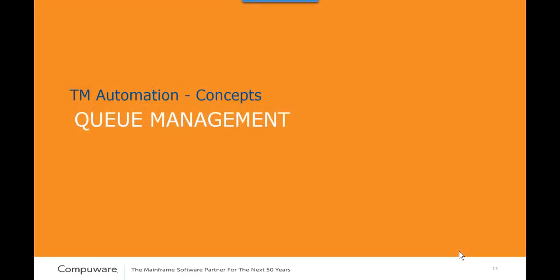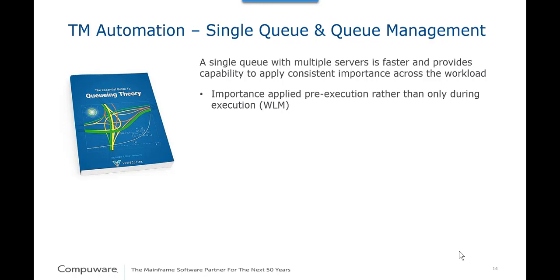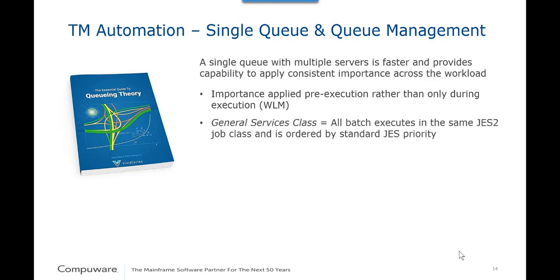Next, the concept of a single queue with multiple servers is faster than traditional queues and has enabled Throughput Manager to apply consistent importance across the workload. Importance is applied pre-execution to each job, in contrast to WLM where importance is applied to a category only during execution. All SLM-managed batch runs in the same class known as the general services class or queue, and like all other JAS2 queues, it's ordered by JAS2 priority. But the general services queue is a dramatic departure from traditional queues. While a job is in the general services queue, SLM's added intelligence allows SLM to order the job by importance, age it, and reorder by urgency every 10 seconds.